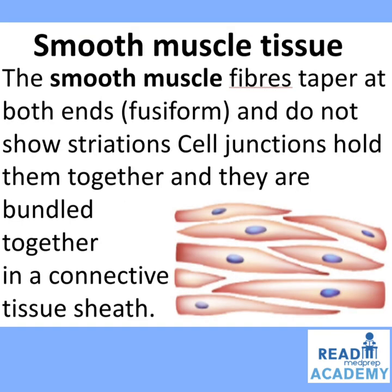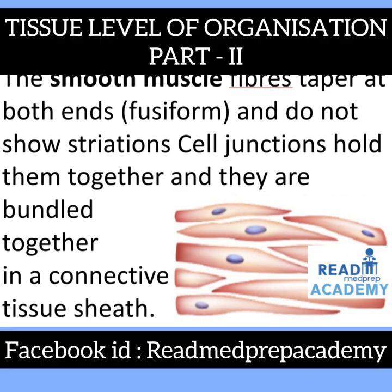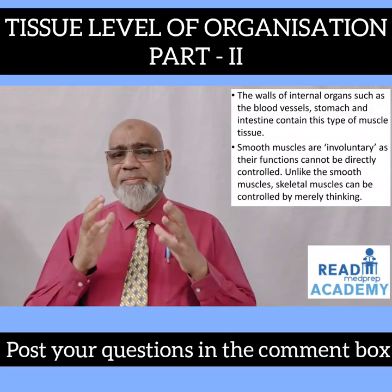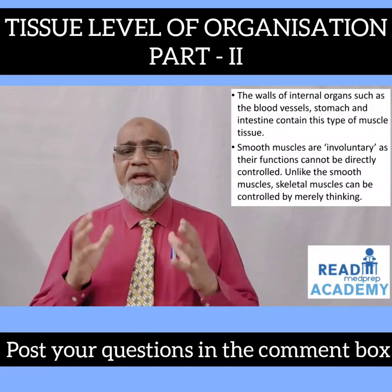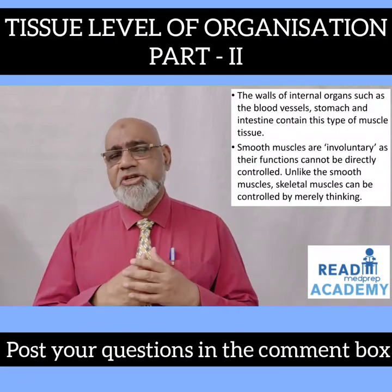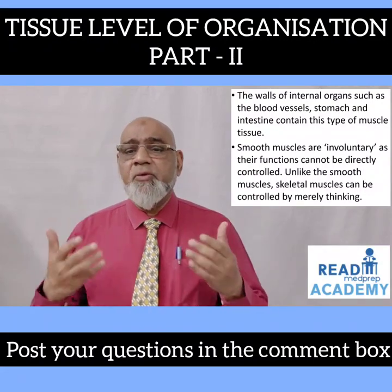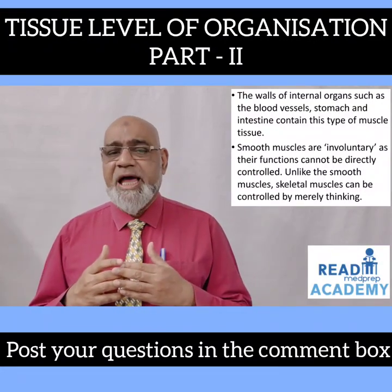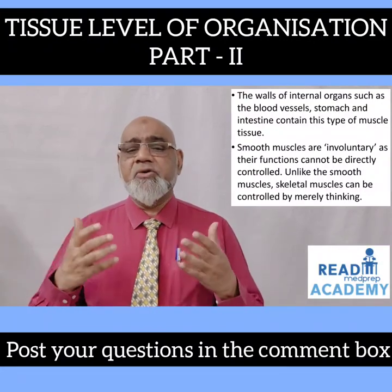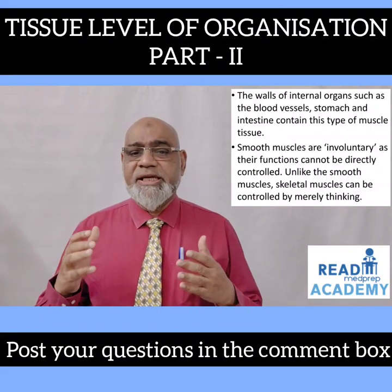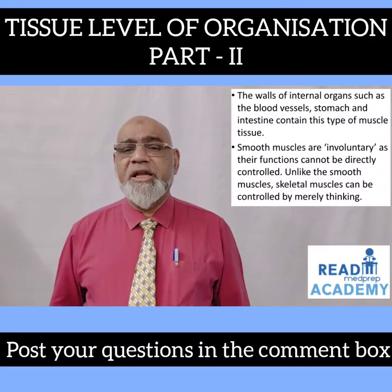Smooth muscle fibers taper at both ends, are fusiform in shape, and do not show striation. Cell junctions hold them together and they are bundled in a connective tissue sheath. The walls of internal organs such as blood vessels, stomach, and intestine contain this type of muscle tissue. Smooth muscles are involuntary muscles, unlike skeletal muscles which can be controlled by merely thinking.